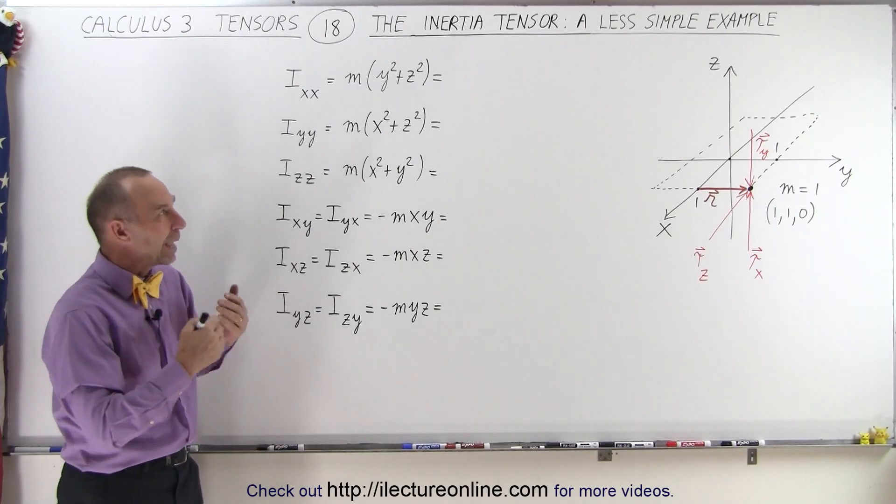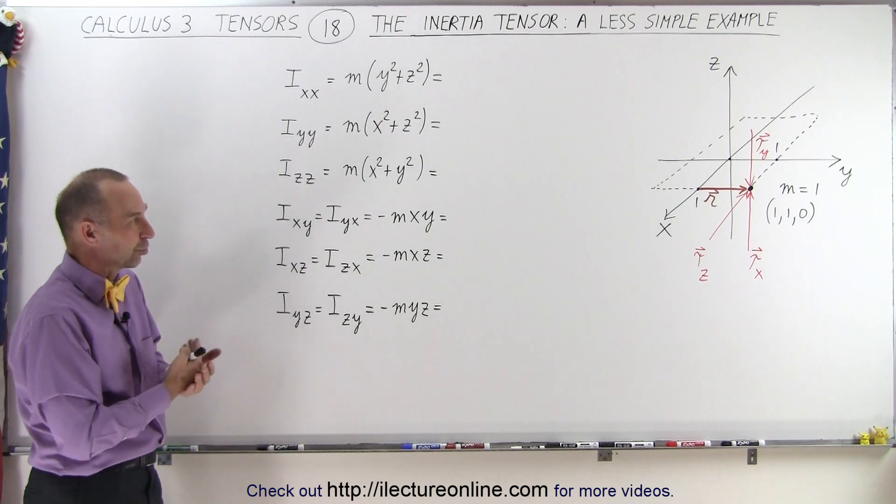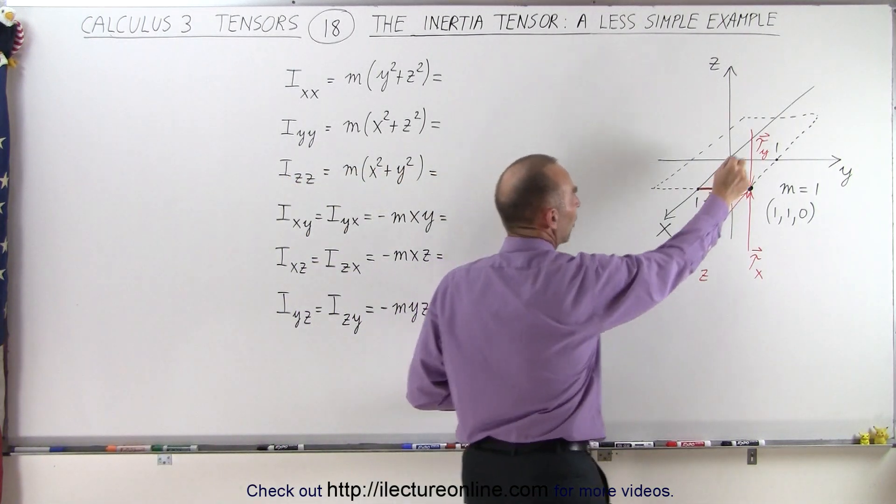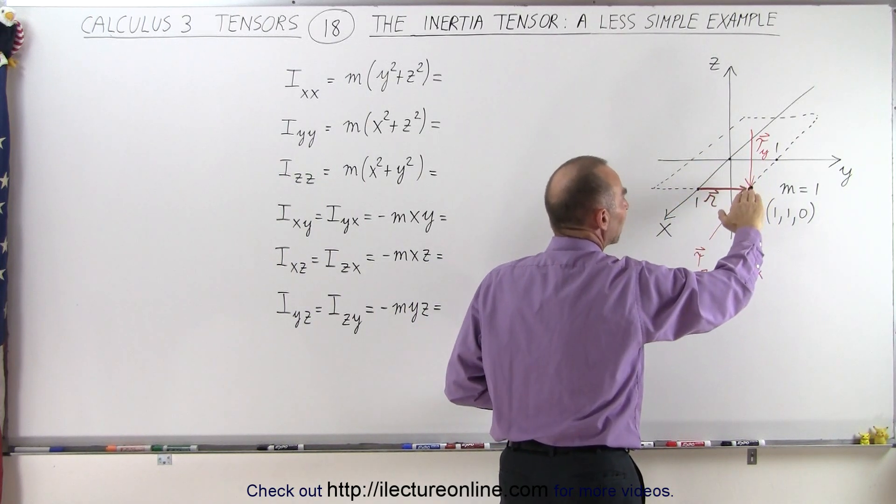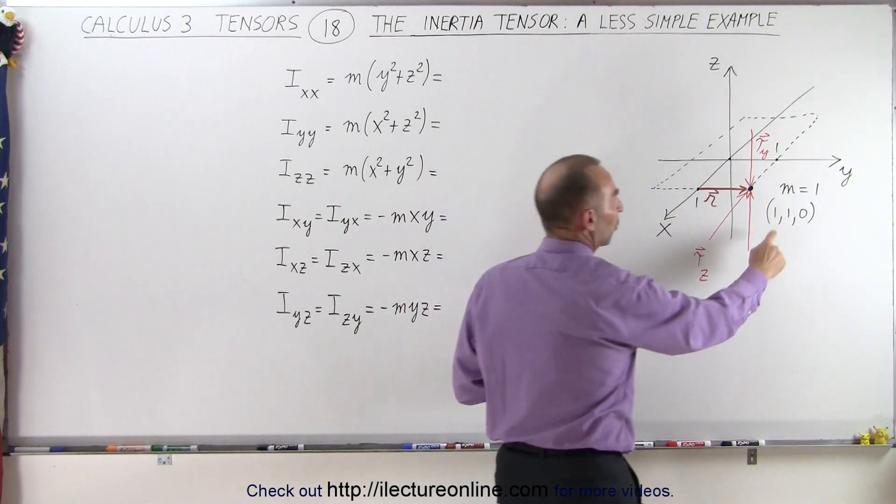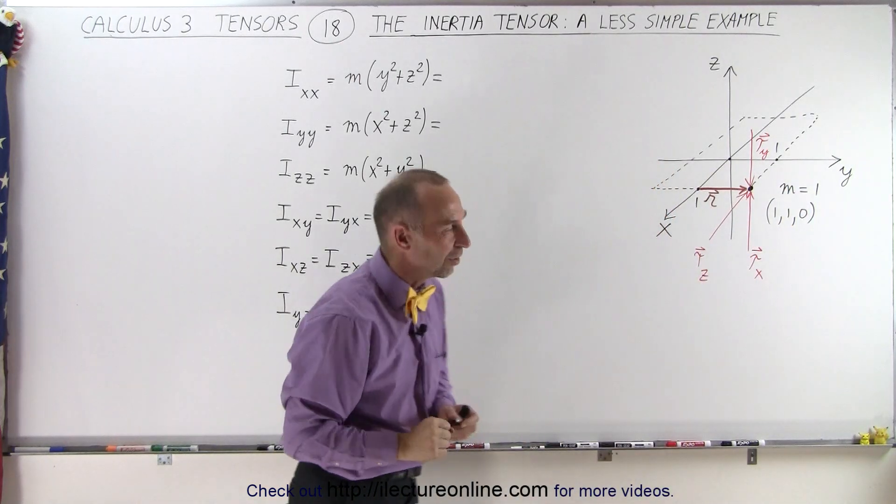Welcome to our lecture online. Here we have a slightly less simple example about the inertia tensor. What we've done now is we've taken our mass and moved it off the axis, off the y-axis before, so now we have it in the x-y plane, not yet in the third dimension in the z-direction, so that our coordinates are 1, 1, 0, and let's assume our mass is equal to 1 just to keep things simple.